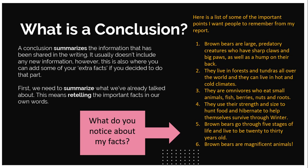Remember, Miss Julia is doing her report on brown bears. She has found something from characteristics: brown bears are large predatory creatures who have sharp claws and big paws as well as a hump on their back. From habitat: they live in forests and tundras all over the world and can live in hot and cold climates. From diet: they are omnivores who eat small animals, fish, berries, nuts, and roots. From survival: they use their strength and size to hunt food and hibernate to help themselves survive through winter. And for the life cycle: brown bears go through five stages of life and live to be 20 to 30 years old.